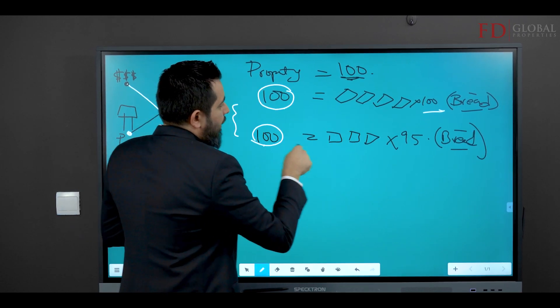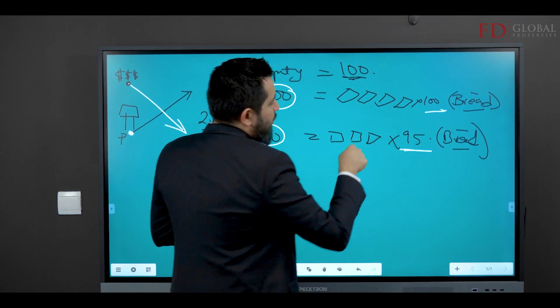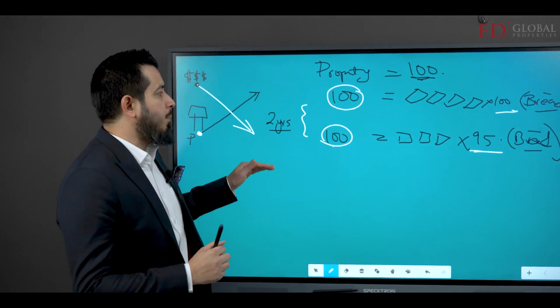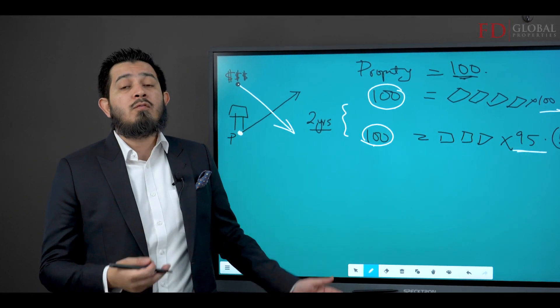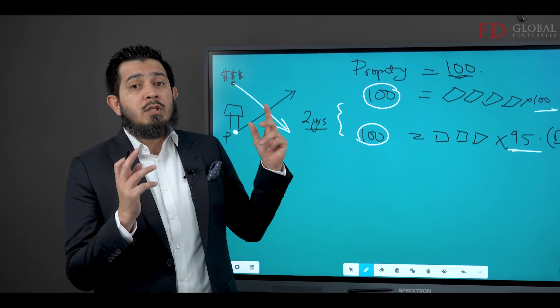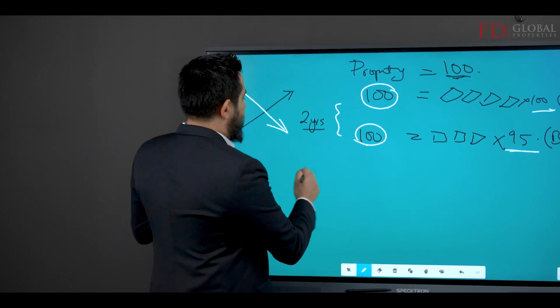What essentially has happened is your hundred dirhams that could get you 100 pieces of bread - now that hundred gets you 95 worth of bread. It actually means the value of money has gone down by five percent, or inflation has gone up by five percent.